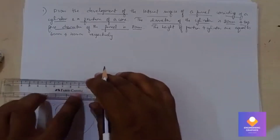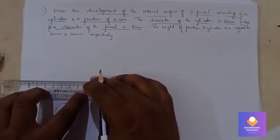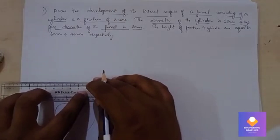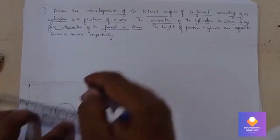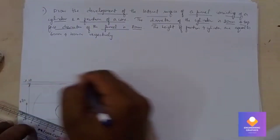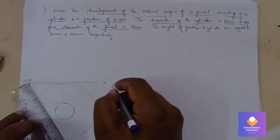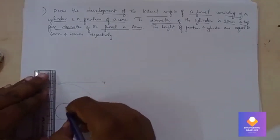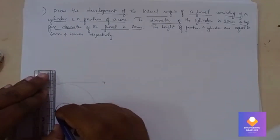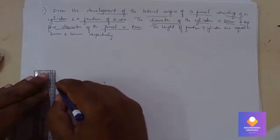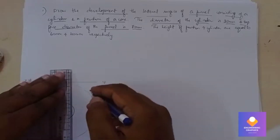Now we will construct the front view by drawing an x-line. You can mention xyvphv. Now project these lines from the outer boundaries to construct the front view.